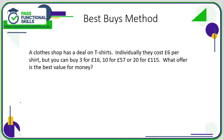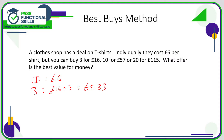Let's take a look at best buys. The key to best buys is trying to work out the price per item, or the price per liter, or the price per milliliter. Here we need to work out the price per t-shirt. Individually it's six pounds. A three-pack — if it's three for sixteen pounds, that works out as sixteen divided by three, which is five pounds 33. So it's better value buying the three pack than individually.